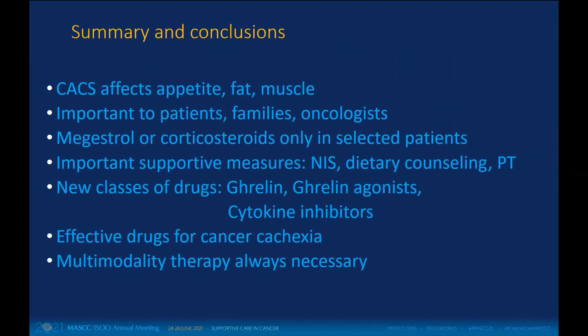In summary, cancer cachexia is important to patients, families, and oncologists because it influences prognosis. We should reserve megestrol or corticosteroids only for selected patients, and it's important to consider supportive care measures — especially nutritional impact symptoms. We now have new classes of drugs, one of which has been approved for cancer cachexia. Multimodality therapy remains necessary even when combined with effective pharmacological therapy.